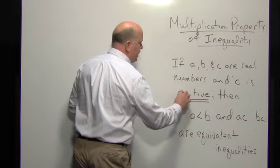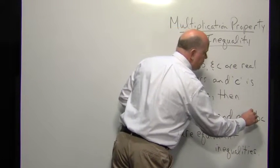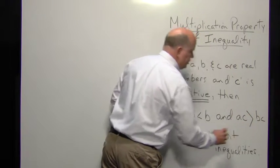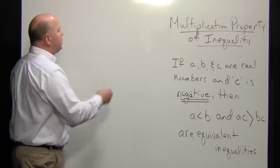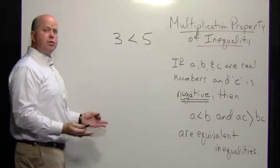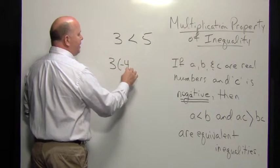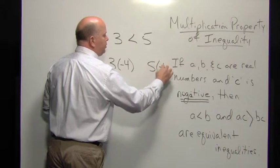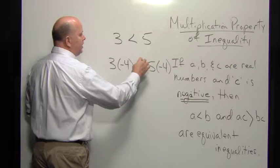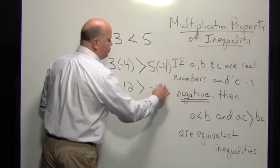If C is negative and we have the same situation as before, this inequality sign switches directions. So if we have three is less than five, which is a true statement, and we take three and multiply it by negative four, and we take five and multiply it by negative four, we must reverse the direction of the inequality symbol, because negative 12 is greater than negative 20.